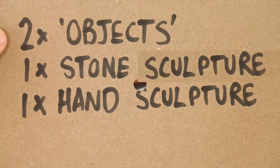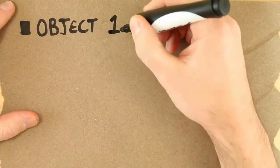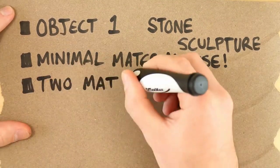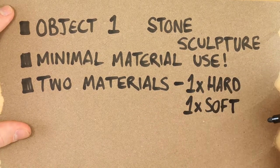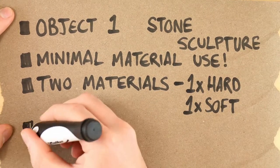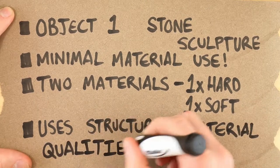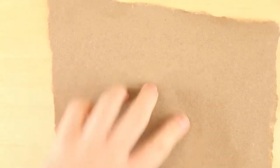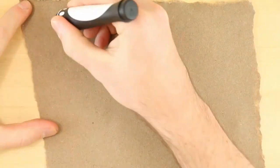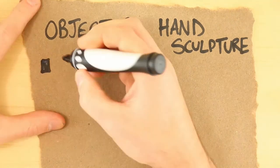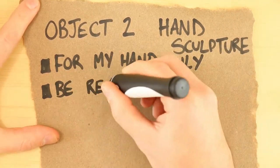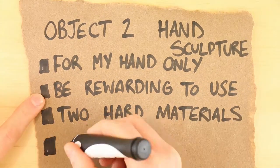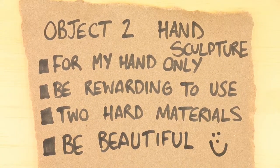Then you can even go ahead and make sub-lists. For object one, the stone sculpture, it has certain requirements: it must use the least amount of materials possible, two of them — one hard and one soft — and use the structural material quality as well. The second object has its own set of criteria, slightly different from object one: must be for my hand, be rewarding to use, two hard materials must be used in its construction, and it also must be beautiful.